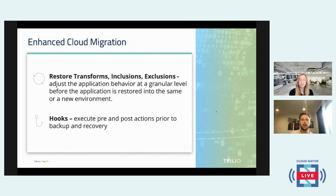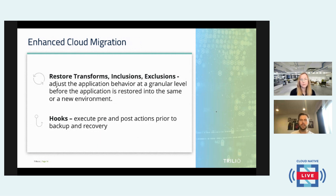Next, we want to talk about enhanced cloud migration features. When migrating applications from core to edge, you're likely using different distributions and very different clusters — not a homogenous system. So we've included something called restore transforms, inclusions, and exclusions. The restore transforms is really essential for core-to-edge migration. What you can do is actually change the metadata of an application before it's restored into the edge environment. For example, if the core cluster and your edge cluster are using two different storage classes, you can use a transform to go in and change the metadata before restoring into the edge cluster.